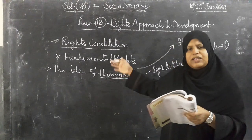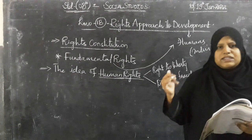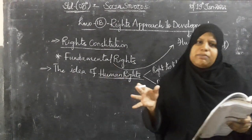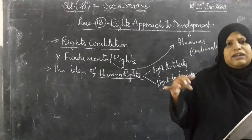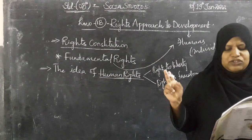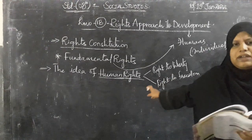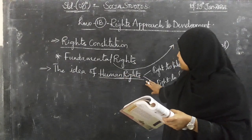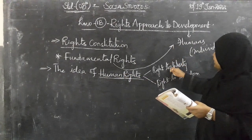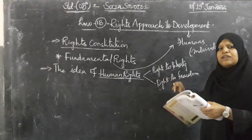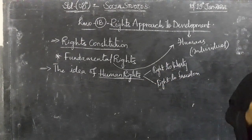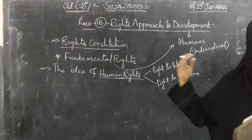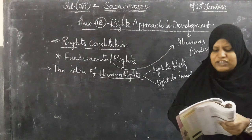Human rights also aim to eliminate discrimination between one particular country and another, so a person cannot be denied their rights. Out of these, two important rights are: right to liberty and right to freedom. Under right to freedom — freedom of expression, freedom of living, freedom of doing a particular type of job, education — all this comes under the right to freedom.